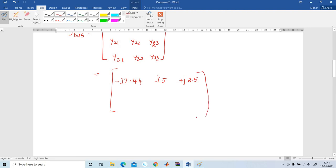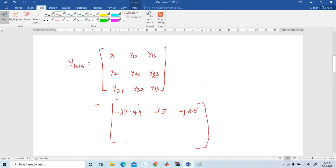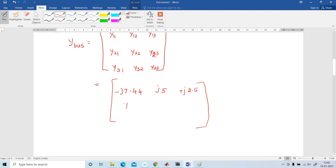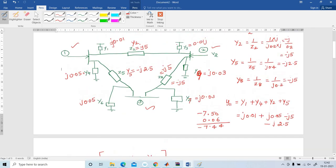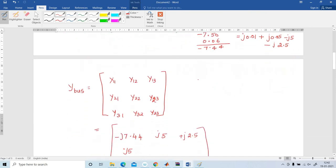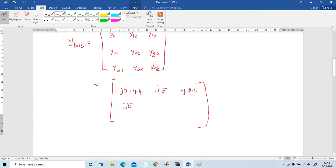Three elements are over. And next Y21. Y21 and Y12 is same. What is Y23? The element connected between 2 and 3, so that is j5, minus of minus j5, that is plus j5. What is Y31? Y31 and Y13 both are same, 2.5. Y32 and Y23 is same, j5.